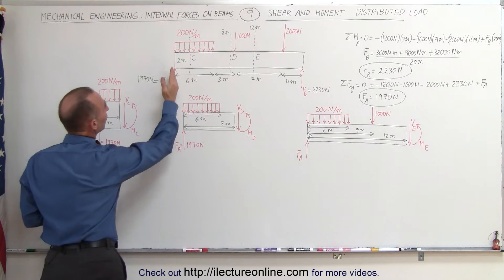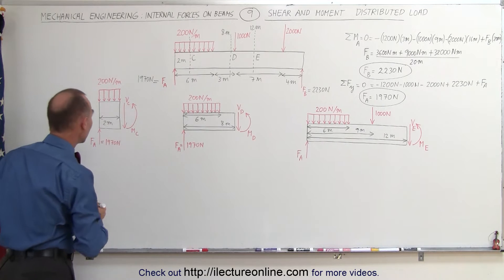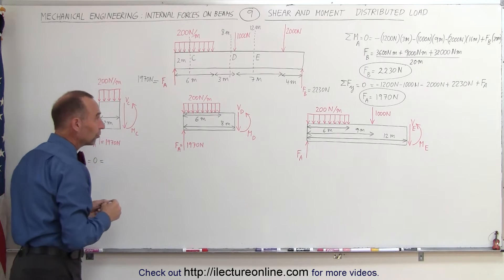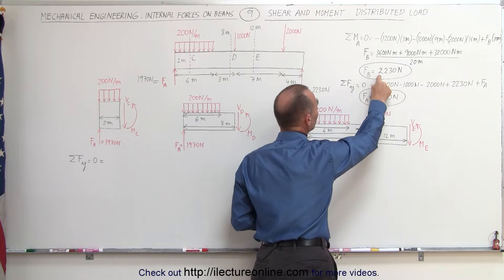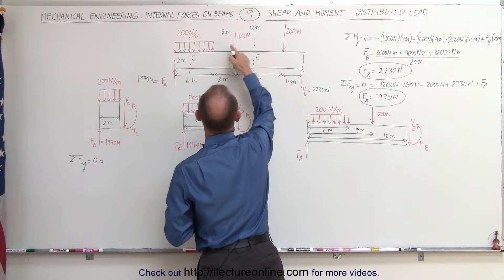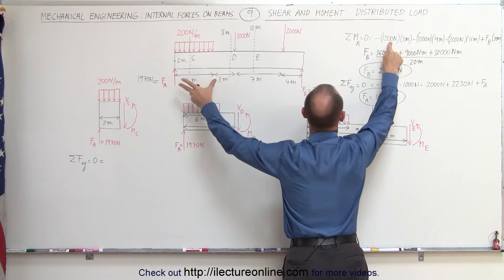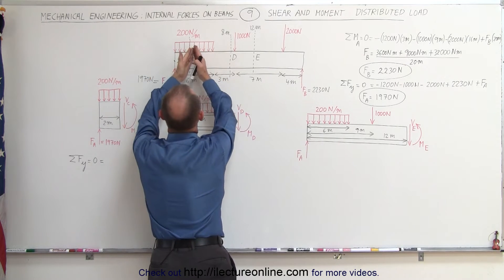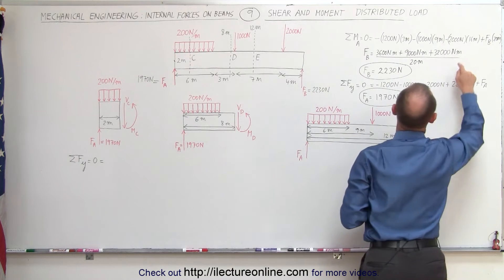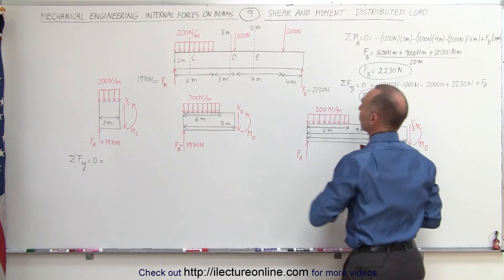Starting with the first one, notice at C it's only two meters from the left side of the beam. The distributed load spans a distance of six meters. I've already pre-calculated the reaction forces at A and B by taking the pivot point at A and summing all the moments: first from the distributed load — 200 N/m times 6 meters equals 1200 N, times the midpoint distance of 3 meters — then the 1000 N force times 9 meters, and the 2000 N force times 16 meters, and the reaction at B at 20 meters.